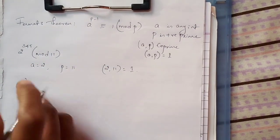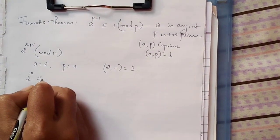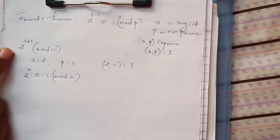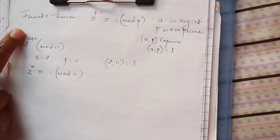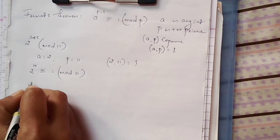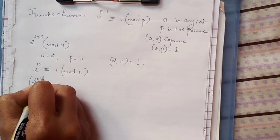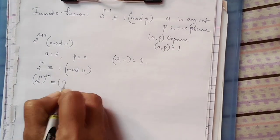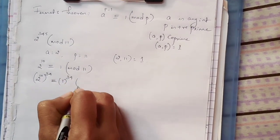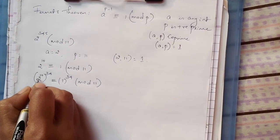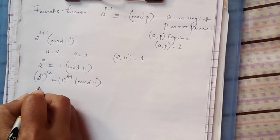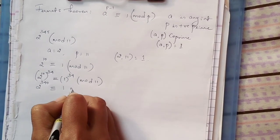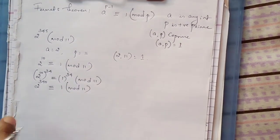By Fermat's theorem, 2 to the power (p minus 1), which is 10, is congruent to 1 mod 11. We have to find 2 to the power 345. Here we have 2 to the power 10, so we raise the power to 34. Once we raise the power on the left-hand side, we have to raise the power on the right side also. 2 to the power 10 raised to power 34 becomes 2 to the power 340, and 1 to the power 34 is 1 itself, mod 11.